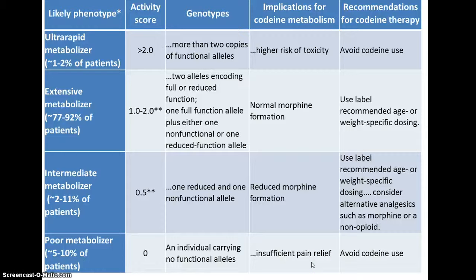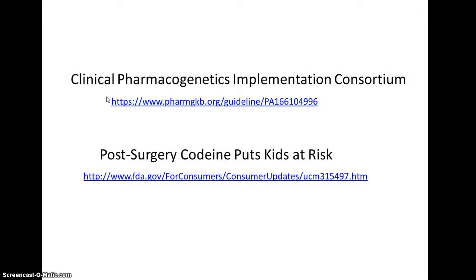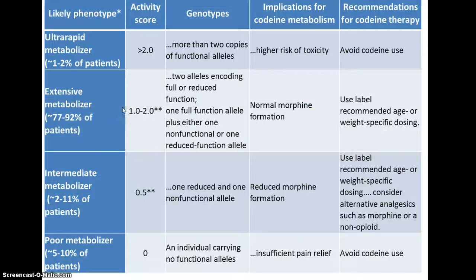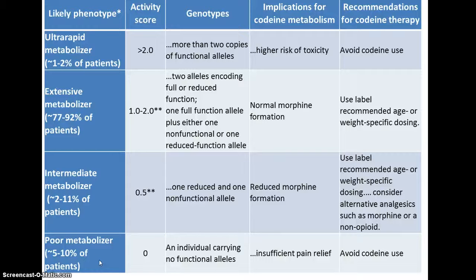Comparing population percentages — and this table represents Caucasian patients only — ultra-rapid metabolizers represent 1 to 2% of the population, whereas poor metabolizers are 5 to 10% of patients. Clinically, the more important problem is that you are more likely to encounter patients who are unable to metabolize codeine and may receive poor pain relief.